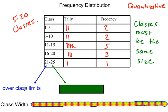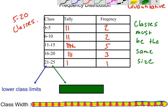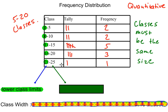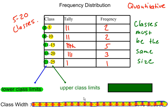There are different parts to the classes. The first numbers—1, 6, 11, 16, 21—are called the lower class limits. If those are the lower class limits, you can probably figure out what the other side is: 5, 10, 15, 20, and 25 are called the upper class limits. Again, classes must be the same size and have the same class width.